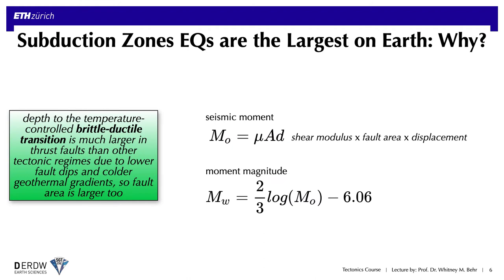More quantitatively, seismic moment is defined as the shear modulus times the fault area times the amount of displacement. Seismic moment can then be converted to moment magnitude, which is how we classify earthquakes. If the thrust fault plane has a much larger area for the same displacement and shear modulus, you end up with a much larger seismic moment and ultimately a much larger moment magnitude.